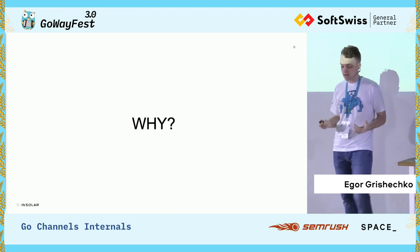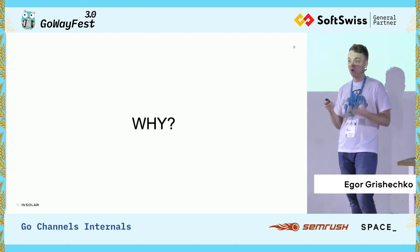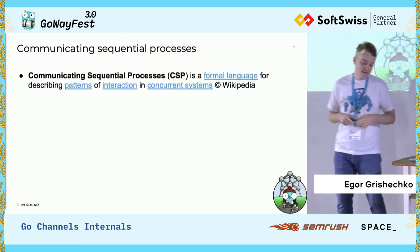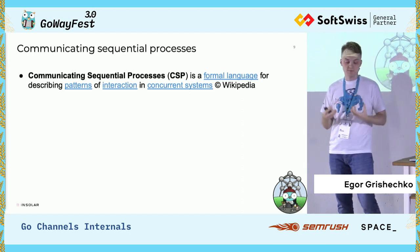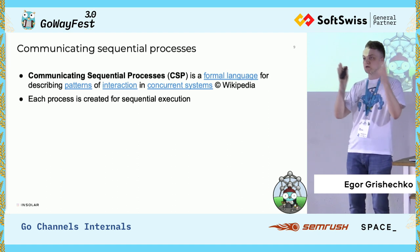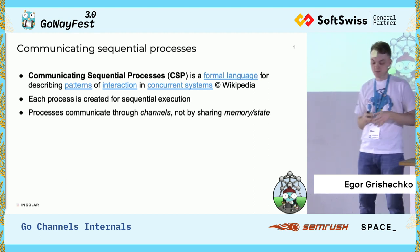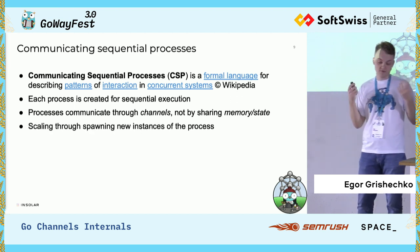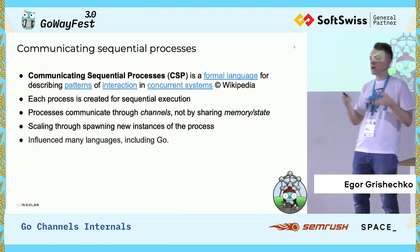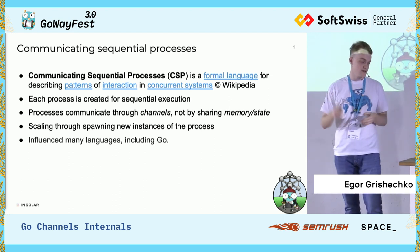When I started to investigate the question, I asked myself only one thing: why did this primitive come to Go? And I found the answer — it's called Communicating Sequential Processes. It's a paradigm that describes patterns of interaction in concurrent systems. Its pillars sound like: each process is created for sequential execution — hello, goroutines; processes communicate through channels, not by sharing memory state — hello, channels; and we scale by spawning new instances of processes — hello, goroutines again. This influenced many languages including Go, because we have goroutines, we have channels, we communicate through channels, not by sharing memory state.